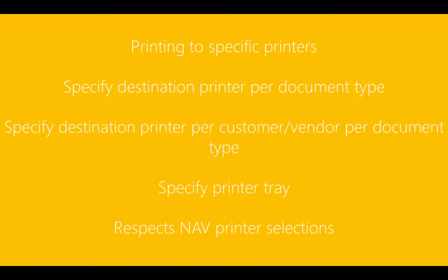Document Delivery can be set to print to a specific destination printer for each document type, or for each customer or vendor for each document type. It also supports specifying a particular printer tray to print to and respects the NAV printer selections.